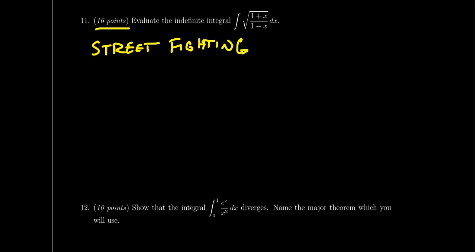As opposed to questions 9 and 10, where I've told you what the topics are going to be — trig subs on question 9, partial fraction decomposition on question 10 — with question 11, anything goes. This involves any of the topics we've learned. The specific lesson about street fighting was lesson 16, where we talked about techniques of integration. Sometimes the right thing to do is some type of algebraic manipulation using algebraic identities.